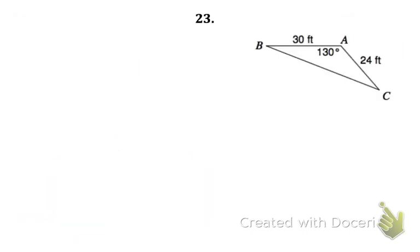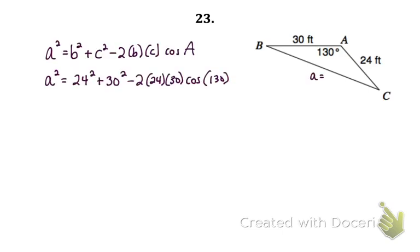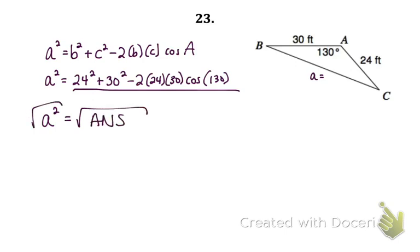Problem 23 is a side-angle-side situation, so I use law of cosines. Starting with side A, I pick the equation that begins with a squared, plug in sides B and C and angle A, compute the right side in my calculator, then square root the answer. After rounding, I get 49.